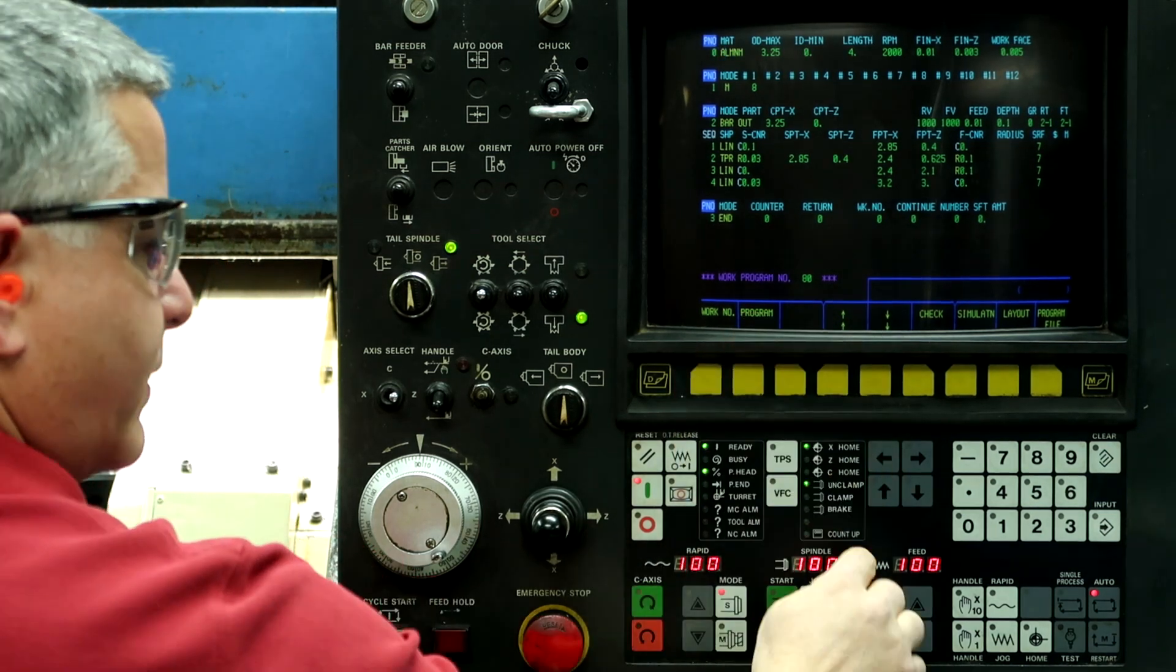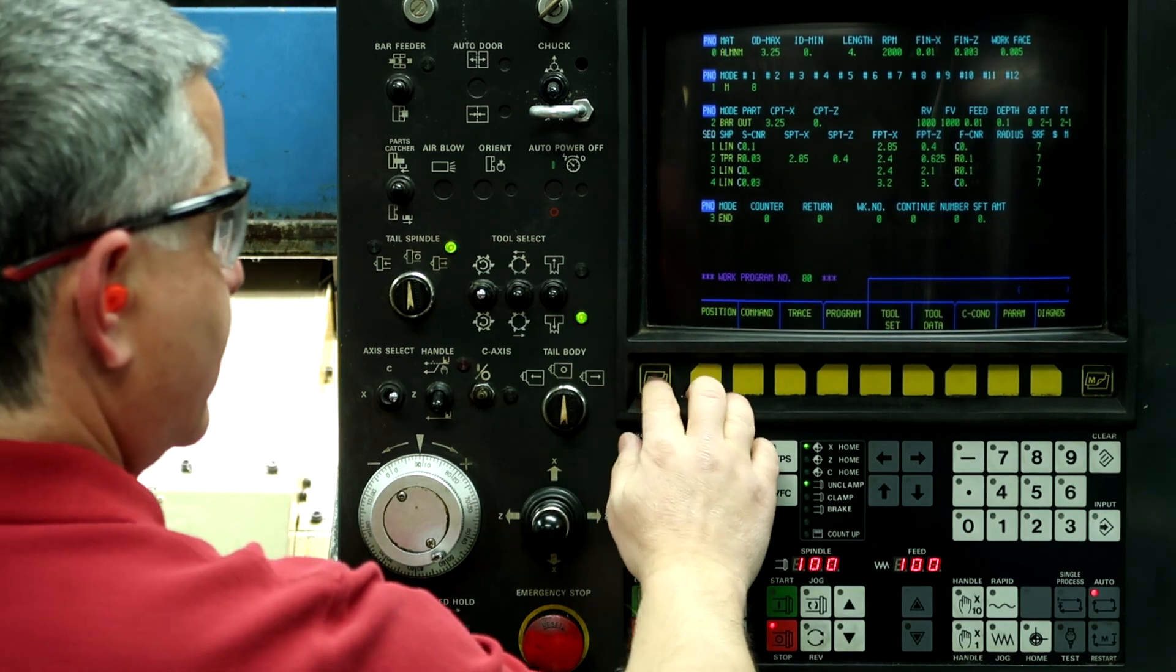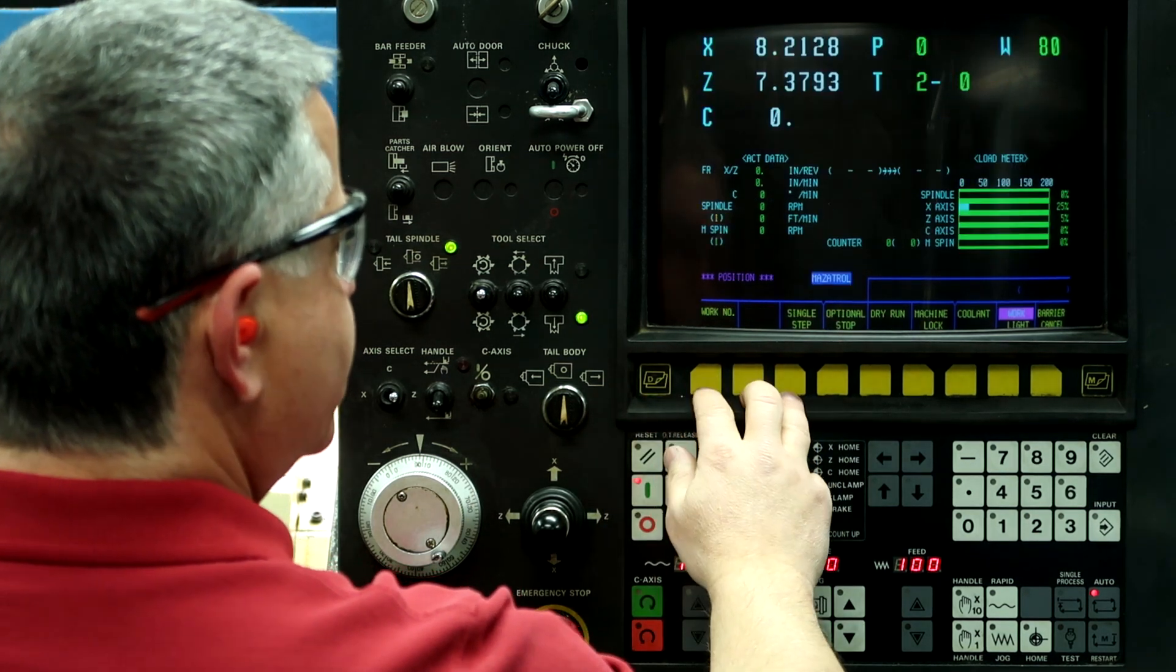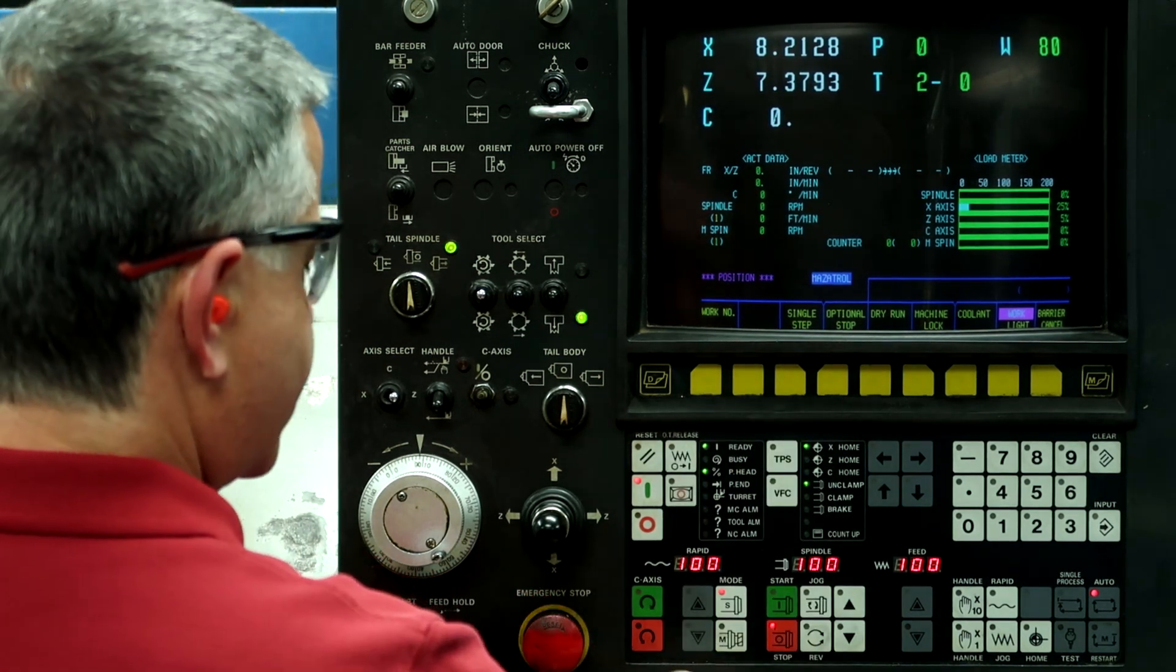So I'm going to show you on the roughing and the finishing pass what the VFC button does for us. So let's go ahead and go to the position screen and then hit cycle start.